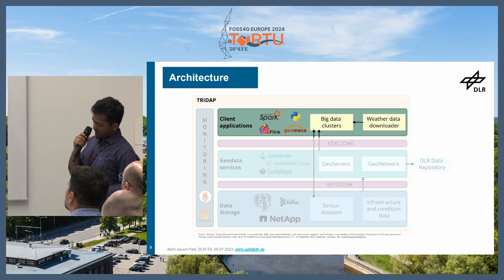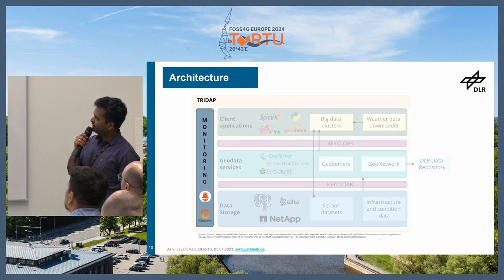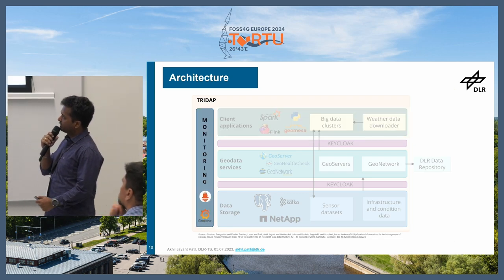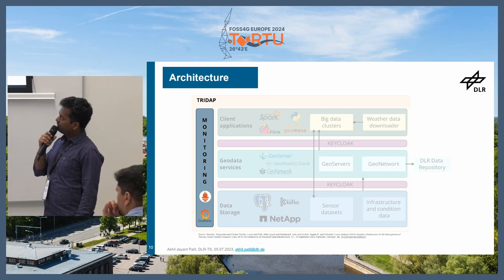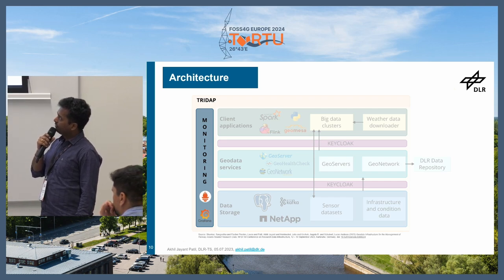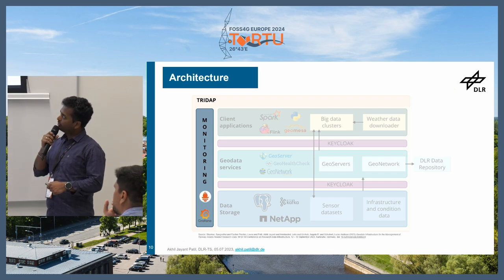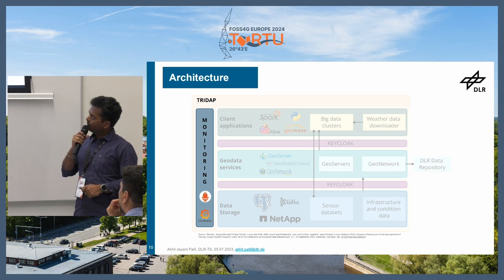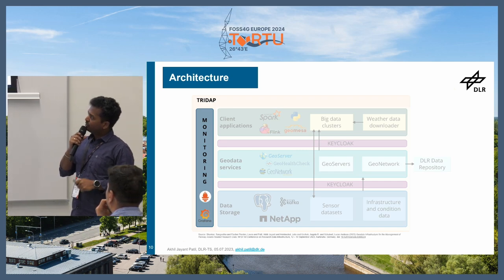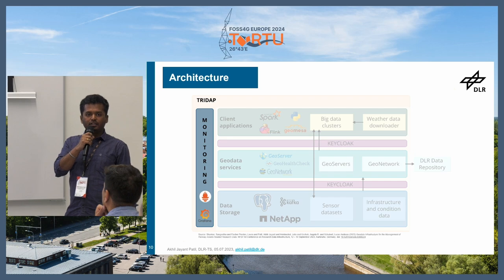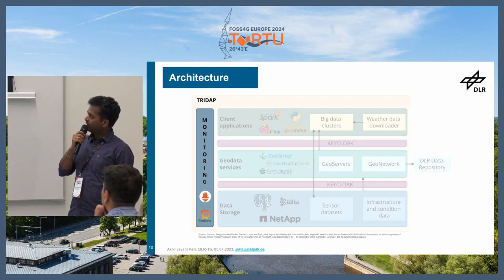The next layer is the monitoring layer, which mostly consists of Grafana and Prometheus. The idea is that we monitor the different services provided through this infrastructure platform as thoroughly as possible, so that services remain in use and no problems occur.